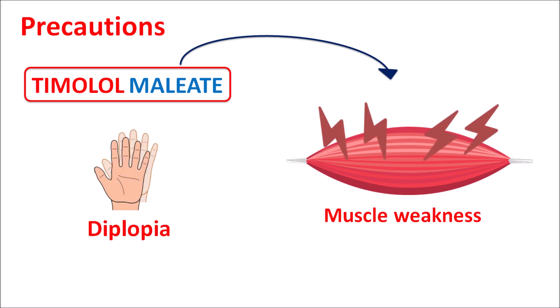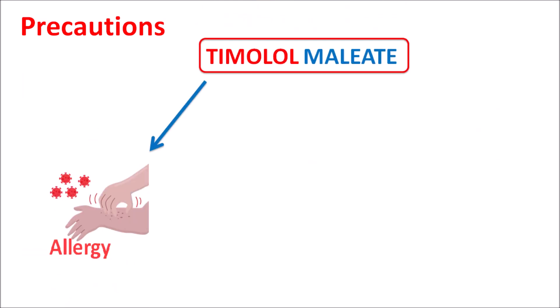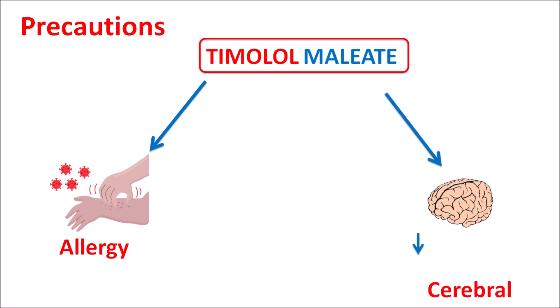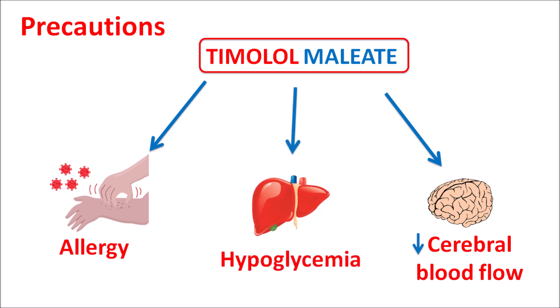This drug can increase muscle weakness, which may result in double vision, diplopia, and fatigue. It may also worsen symptoms of myasthenia gravis, so if a patient already has any muscle weakness, this drug should be used carefully. Timolol maleate can also increase the allergic response by increasing histamine release from mast cells, and it can reduce cerebral blood flow.